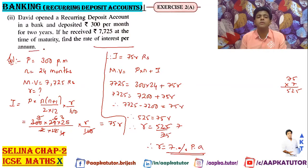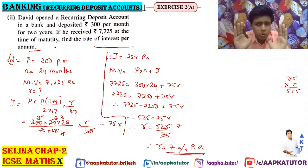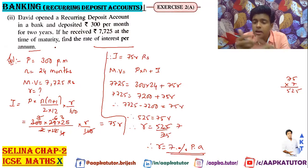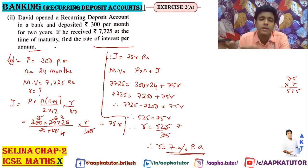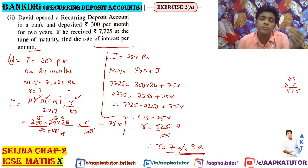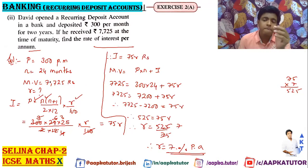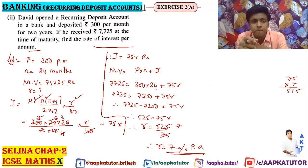Rate of interest per annum is 7%. So in this chapter, we have taken out different unknowns: maturity value, P, and R. This is a different type of sum that you will get in this chapter — there are a lot of different types.